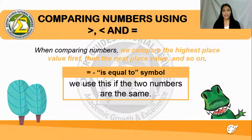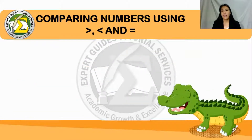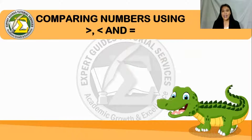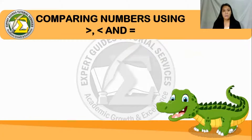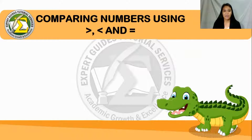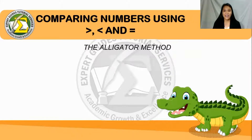Reading about greater than and less than can still be confusing with the symbols. So, as I mentioned, our alligator friend will help us understand these symbols. Let's say that this alligator is very, very hungry, and the numbers on the left and right represent the number of fishes the alligator wants to eat. Let's use the alligator method to understand greater than and less than.